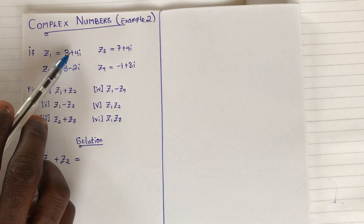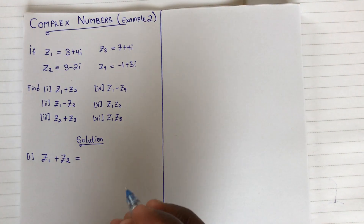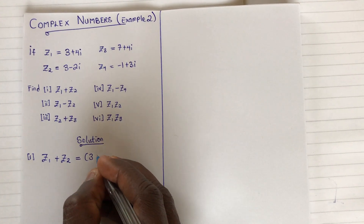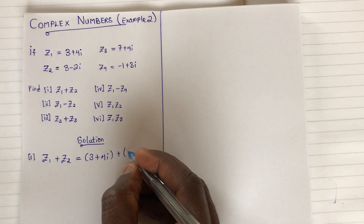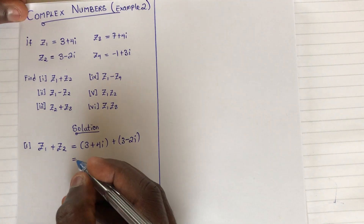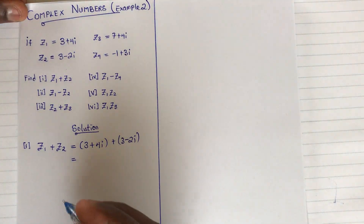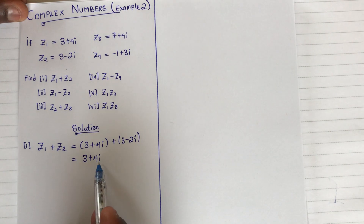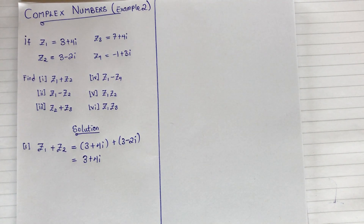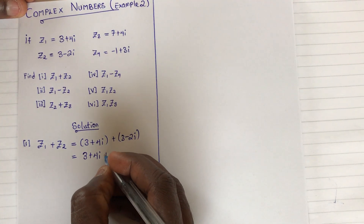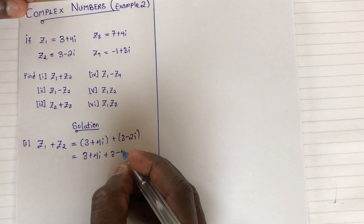We are finding z1 plus z2. I have z1 to be 3 plus 4i and z2 to be 3 minus 2i. All I have to do is add them: 3 plus 4i adding to 3 minus 2i. The next step is to remove the brackets — there's no need to keep them. Here, i is the complex notation, as covered in the introduction, and 3 and 4 are the real numbers.